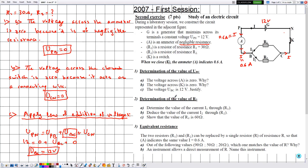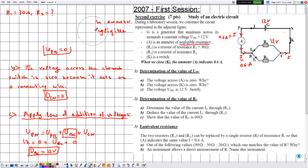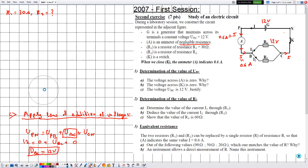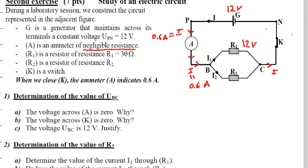The voltage UBC equals 12 volts. In number two, part a, they ask us to determine the value of the current I1 through R1.